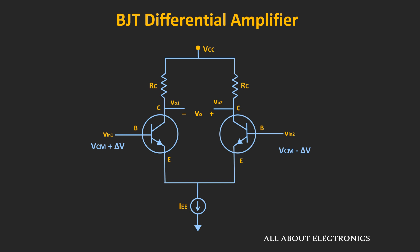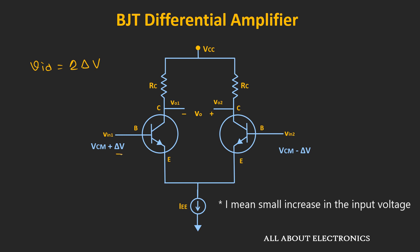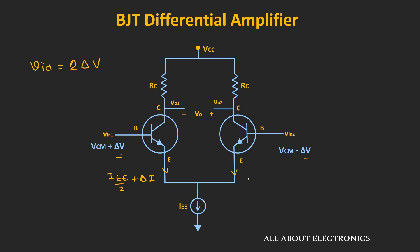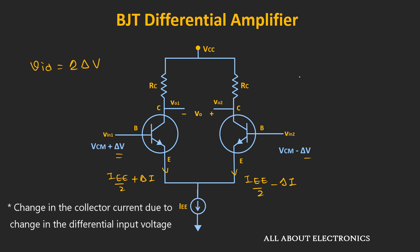Let's say that on top of the common mode voltage, a small differential input ΔV is applied at Vin1, and the voltage at Vin2 is reduced by ΔV. Because of the small increase in input voltage, the emitter current has increased slightly to IE/2 + ΔI. Similarly, on the other side, because of the reduction in input voltage, the emitter current becomes IE/2 − ΔI. The summation of these two currents still equals IE. Now let's find the relationship between the change in collector current and the change in input voltage, and qualitatively find the voltage gain.